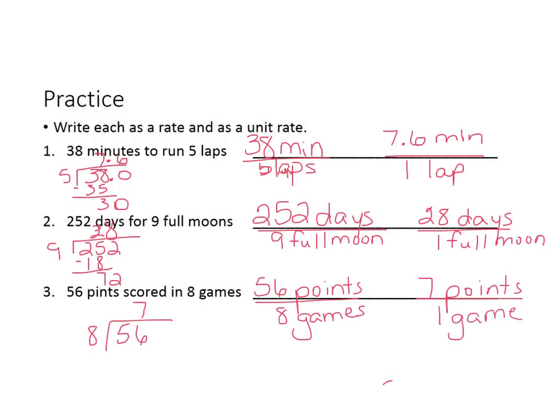What that unit rate tells us is, for example, in one game you made 7 points. And at that rate, you would be making 56 points in eight games. So make sure you write all this down before you go on to the next screen.